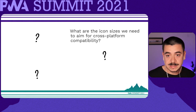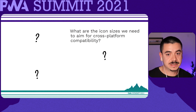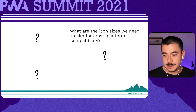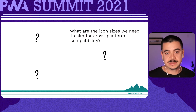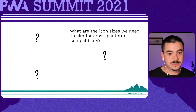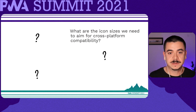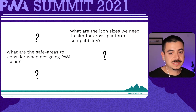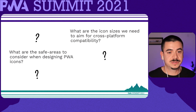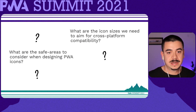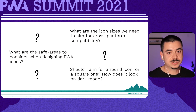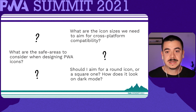These are the common questions raised during the design and development process of a progressive web app: What are the icon sizes we need to aim for cross-platform compatibility? What are the safe areas to consider when designing PWA icons? Should I aim for a round icon or a square one? How does it look in dark mode? Let's try to find out the answers together.